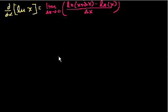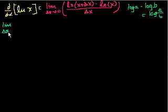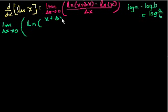Let's use some logarithm properties to simplify this. Remember that log(a) minus log(b) is equal to log(a/b). That comes from the fact that logarithm expressions are essentially exponents, so they follow the exponent rules. Applying this property, the numerator — ln(x + Δx) minus ln(x) — becomes the natural log of (x plus delta x) over x, all of that over delta x.